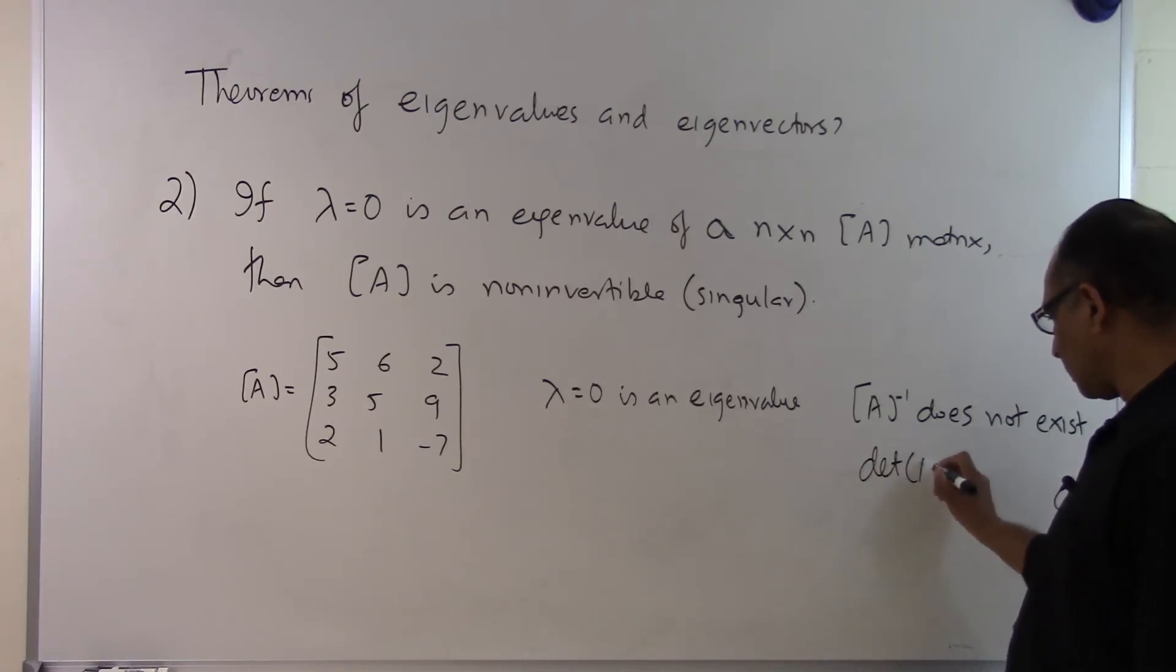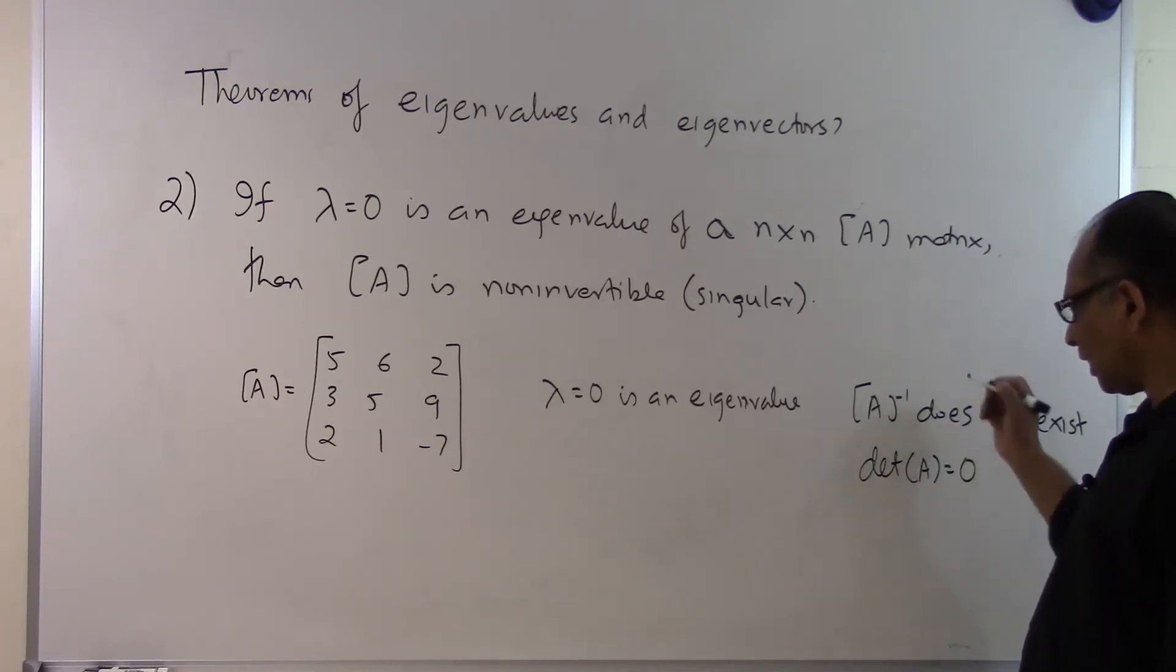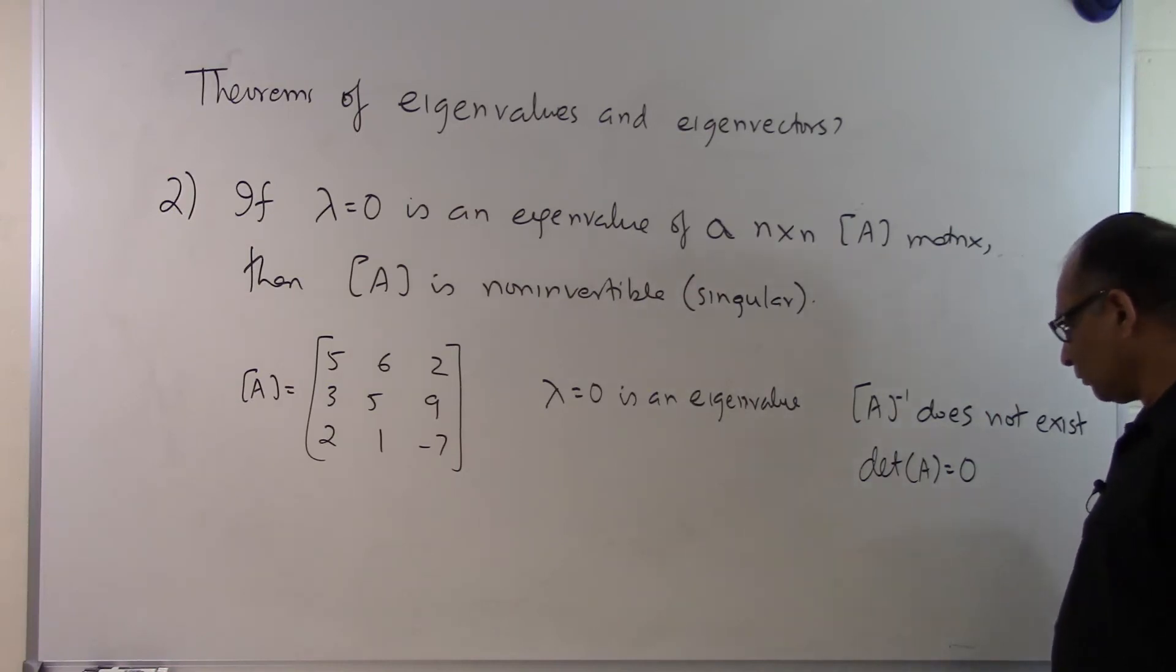It also means that the determinant of A is equal to 0 because if A inverse does not exist then we know that for a square matrix the determinant of that matrix has to be equal to 0. And that's the end of this segment.